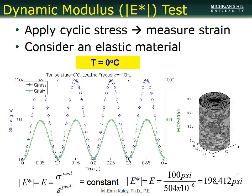In the dynamic modulus test we apply a cyclic stress and measure the corresponding strain. For an elastic material run at zero degrees Celsius, we would get, say, a peak-to-peak stress of 100 psi. The corresponding strain is about 500 microstrain, which gives a modulus of approximately 190,000 psi.